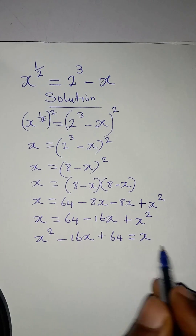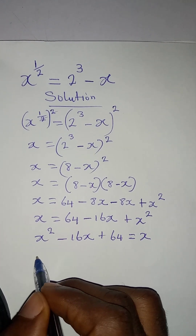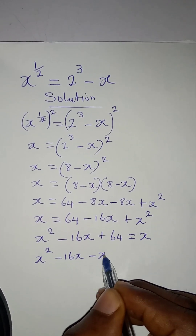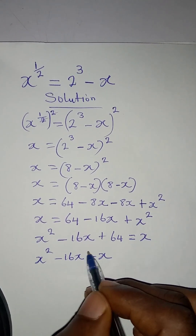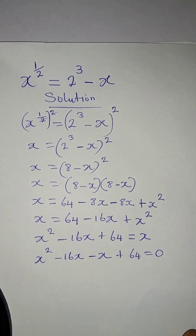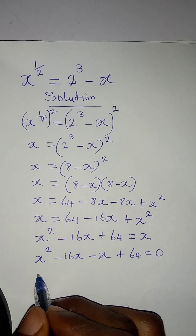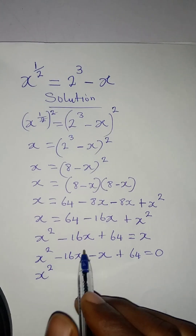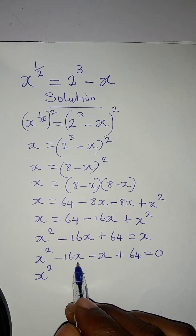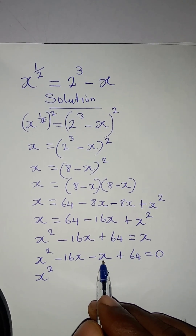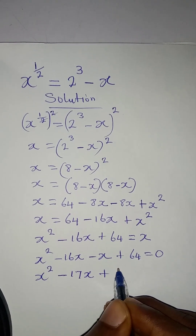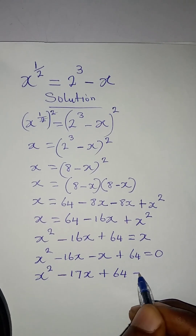Then I'll collect like terms: x squared minus 16x, then minus x coming to the left, plus 64 equals zero. So that gives us x squared minus 17x plus 64 equals zero. Now we have a quadratic equation to solve.